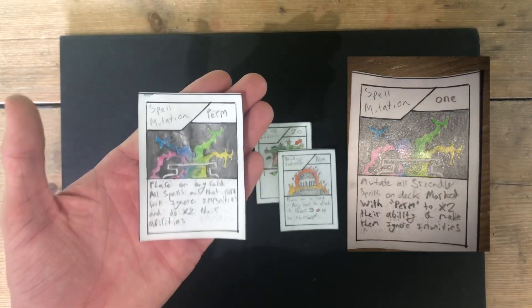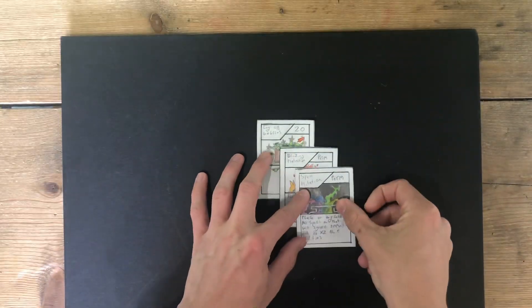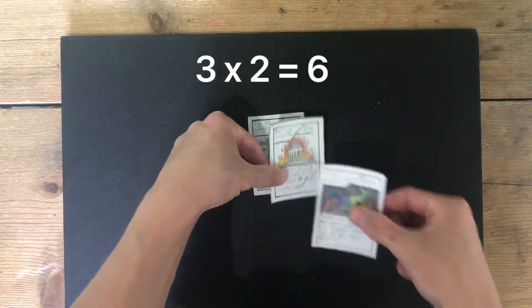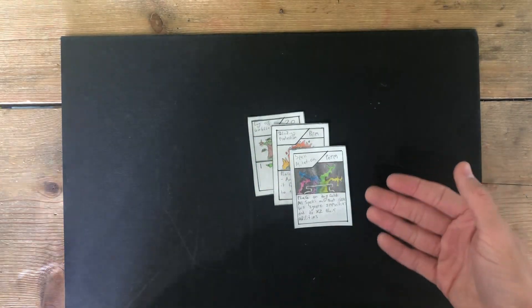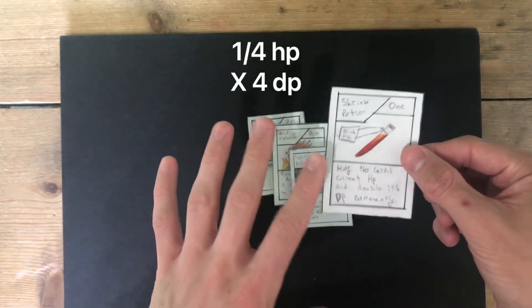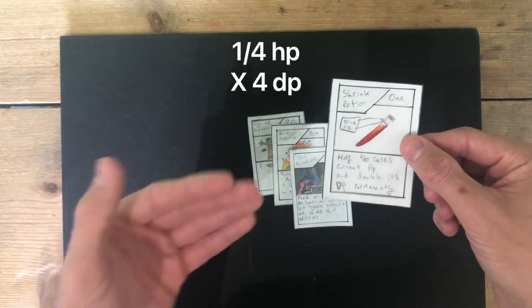Spell Mutation is becoming a permanent spell. When playing it, it now doubles the effect of anything that is already on it, so this Blazing Protection will now do 6 damage to things that attack it. But now, any new spells placed afterwards will also take effect, so the Shrink Potion will do double its effect, quartering your HP but multiplying your damage by 4.